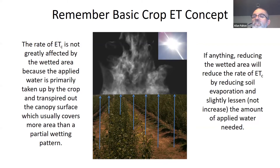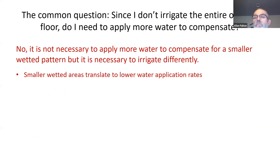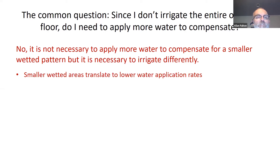If anything, reducing the wetted area will reduce the rate of crop evapotranspiration by reducing the soil evaporation and slightly lessen the amount of applied water needed. So in my opinion, it's not necessary to apply more water to compensate for a smaller wetted pattern, but it is necessary to irrigate differently.